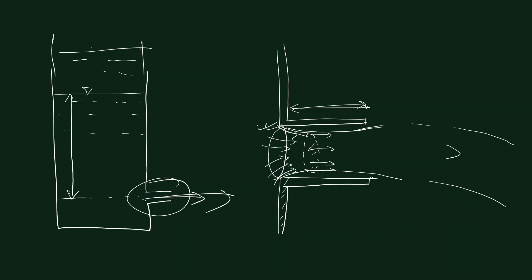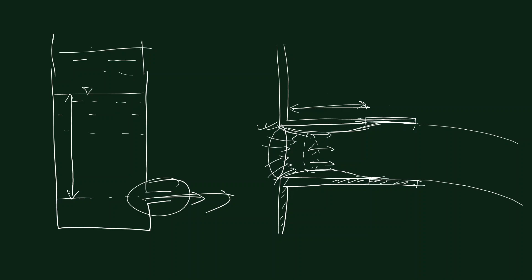But if the mouthpiece is long enough, the flow expands so that when it leaves the mouthpiece outlet it fills up the entire cross section. In that case, we know that at the outlet the pressure is equal to atmospheric pressure. At the vena contracta, since the cross section of the flow is smaller, the velocity there will be higher than the velocity at the outlet — the difference is very small, but still there is some difference.